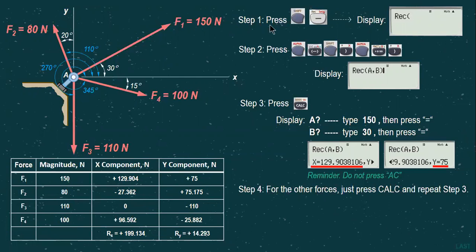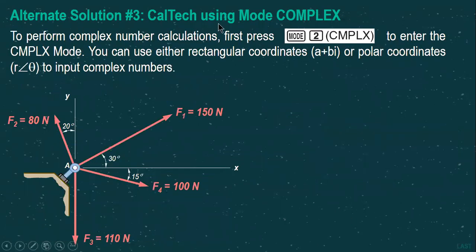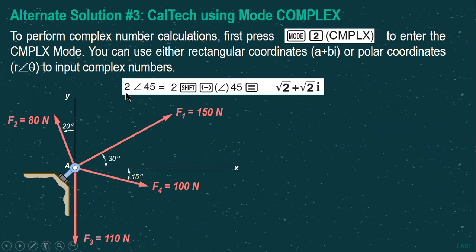After summing components in the repetitive A-B style, the third and fastest, easiest method is using the calculator's complex mode.